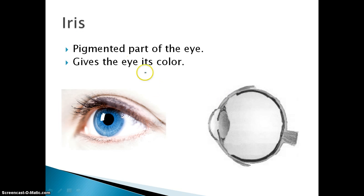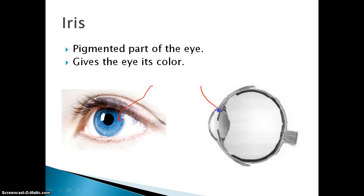Next we have the iris — that is the pigmented part of the eye. Pigment means color, and so the iris is what gives the eye its color. In this case, this person has blue eyes. That is the iris right here — all of this blue stuff. On my blank eye diagram, that is this region right here that sticks out a little bit.